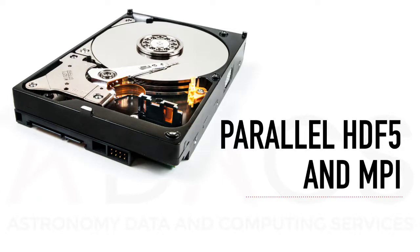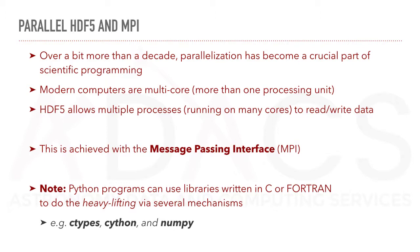In this final section, we will have a look at parallel HDF5 and MPI. For more than a decade, parallelization has become a crucial part of scientific programming. Modern computers are multi-core, meaning that they have more than one processing unit. HDF5 allows multiple processes, running on many cores, to read and write data.